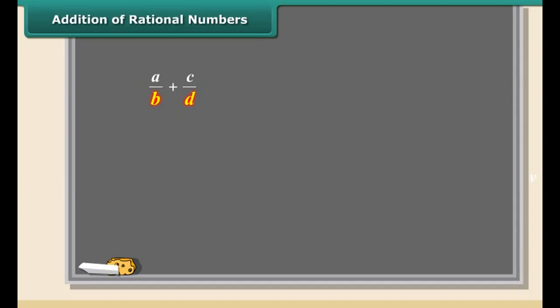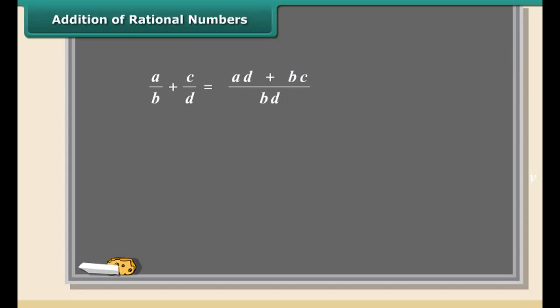How to add rational numbers? It's easy. Before we add, keep in mind the rational numbers should have the same bottom number — that is, both rational numbers must have a common denominator. The easiest way to do this is to multiply both parts of each number by the bottom part of the other.